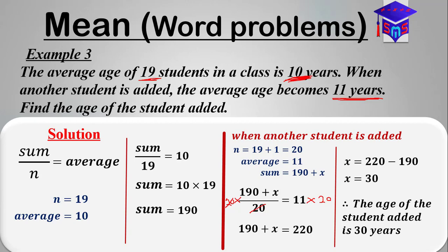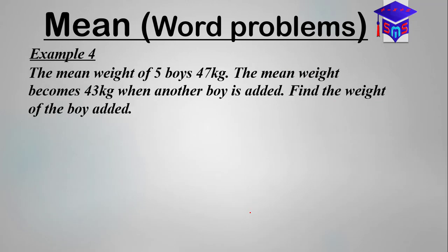Thank you very much for watching. Guess what question you're going to answer in the next video? This question says that the mean weight of five boys is 47 kilograms. The mean weight becomes 43 when another boy is added. Find the weight of the boy added.